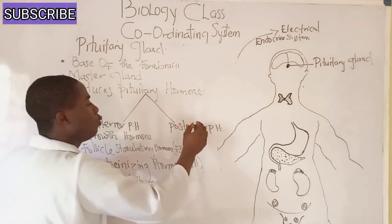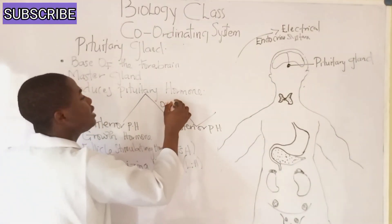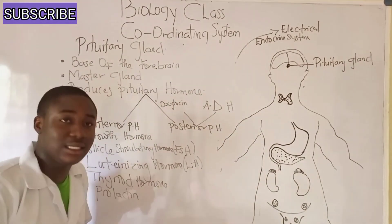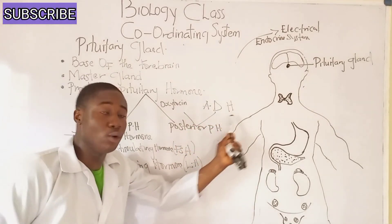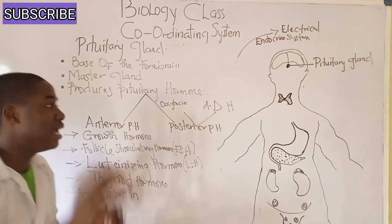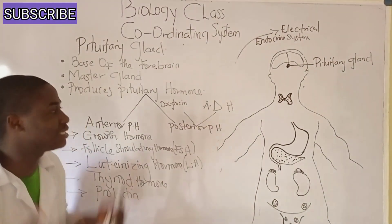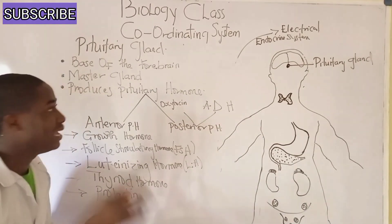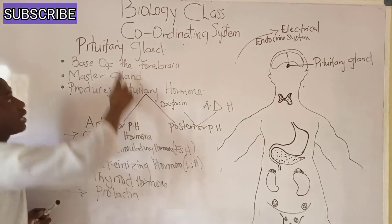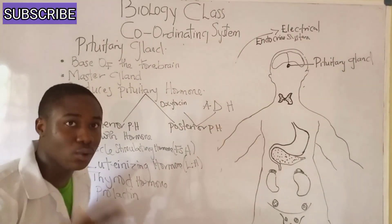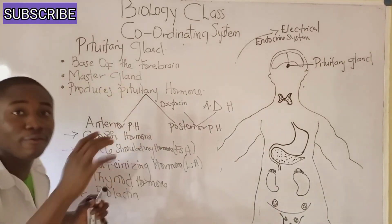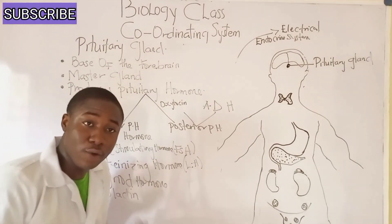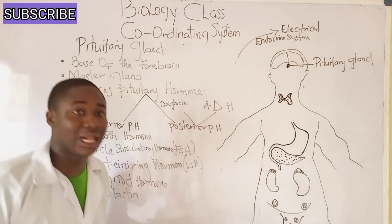Under the posterior pituitary hormones, we have oxytocin and ADH — the antidiuretic hormone. The pituitary gland, which produces all these hormones, is located at the base of the forebrain and is called the master gland because its activities influence the activities of other glands.